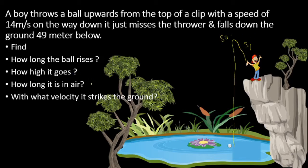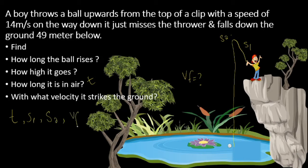How long is it in the air? With what velocity does it strike the ground — what is the final velocity? We have to calculate the time, the first distance S1, the second distance S2, the total distance, and the final velocity. These are all the required quantities.